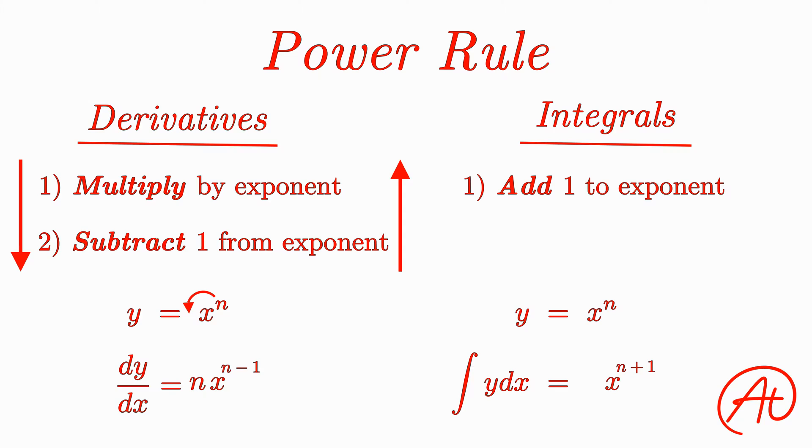Then, since the previous step was to multiply by the exponent, we need to now divide by that exponent. So in the end, we would find that the integral of x raised to the nth power is x raised to the n plus 1 power divided by n plus 1.